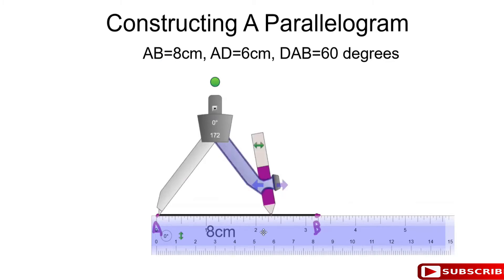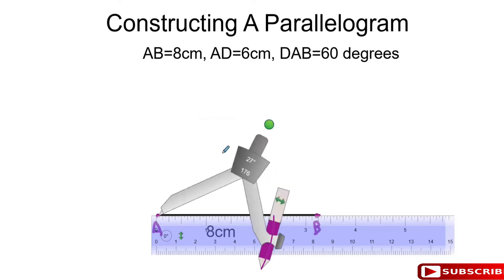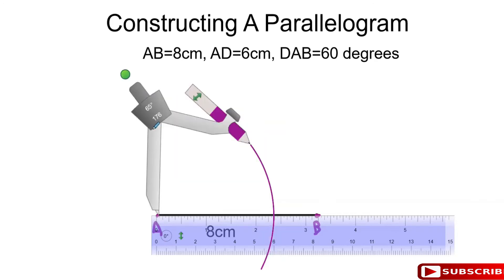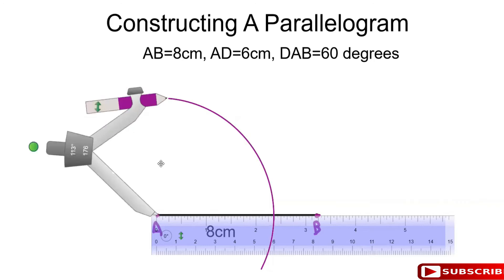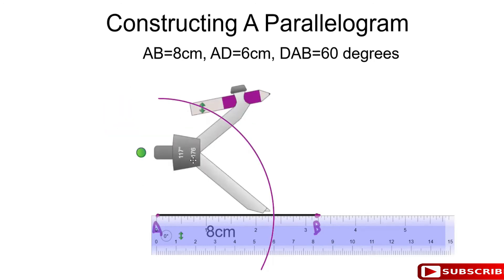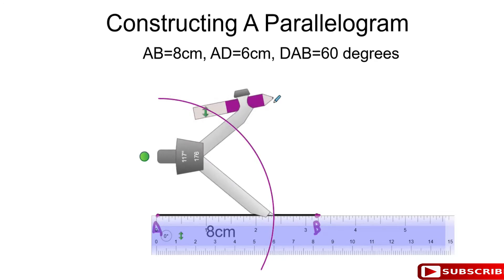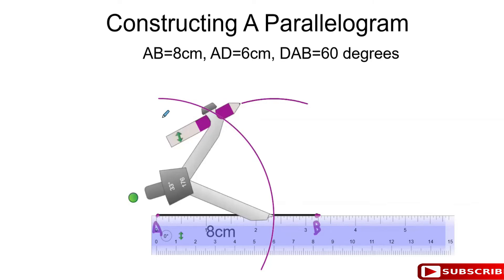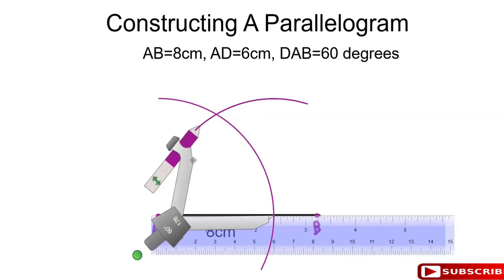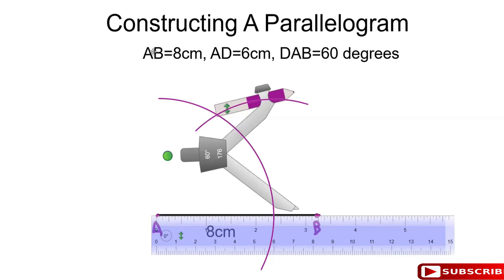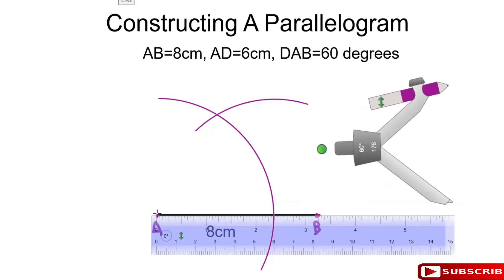I'm going to swing an arc from A. Then at the point of intersection with the horizontal line, we swing another arc using the same arc swing. That is now 60 degrees. And the length of the line should be 6 cm — this line will be 6 cm.